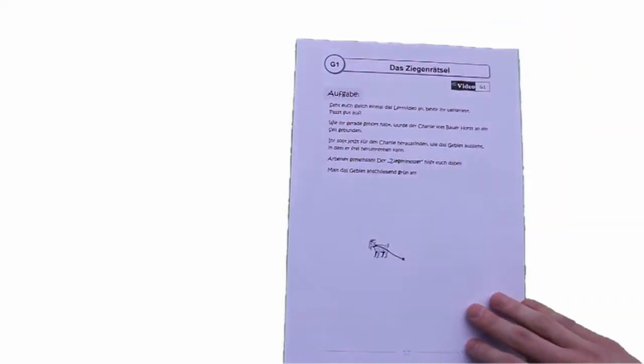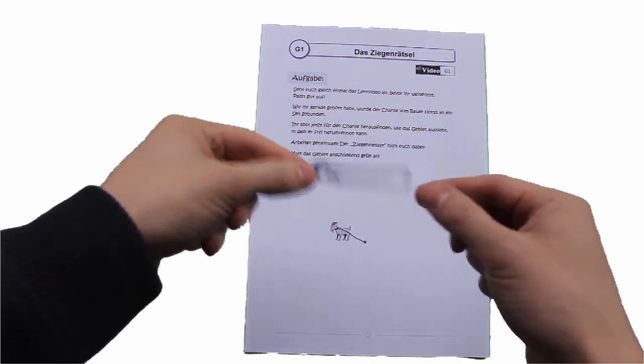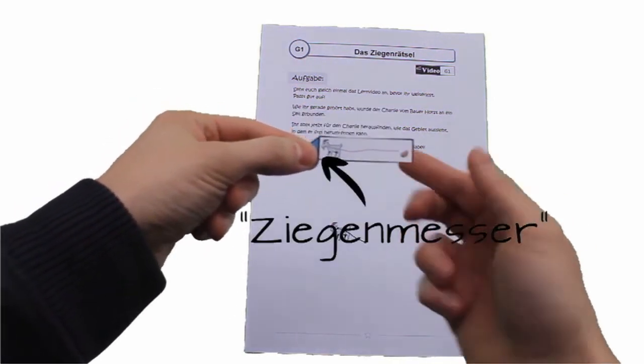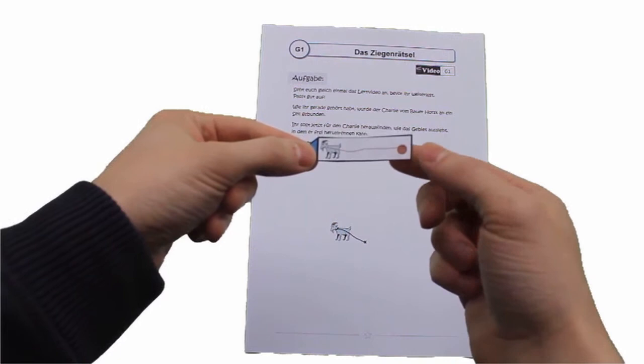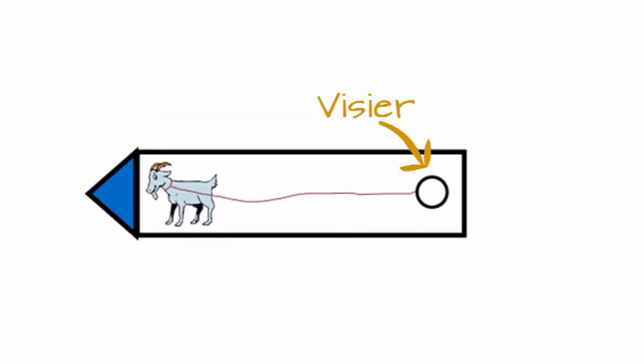Als erstes nehmt ihr mal das Arbeitsblatt. Und dazu nehmt ihr dann noch das Werkzeug, das dabei ist, das nennen wir den Ziegenmesser. Ihr seht, hat der Ziegenmesser hier ein Loch, das nennen wir das Visier. Wozu ihr das Visier nachher noch genau braucht, erkläre ich euch noch.